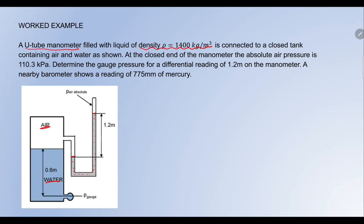The tank has air and water, and we also know the height of the water. At the closed end of the manometer, the absolute air pressure is 110.3 kPa. Something is connected over here which is applying pressure. We need to determine the gauge pressure.